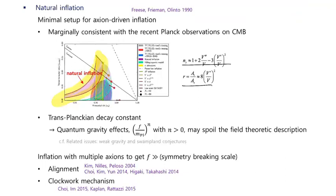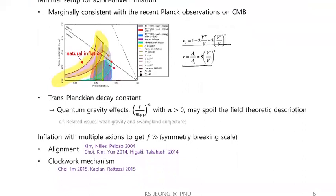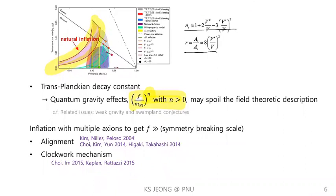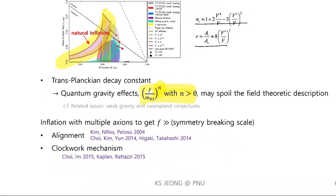The spectral index n_s and the tensor-to-scalar ratio r are determined by the shape of the potential. Another issue is that natural inflation requires a super-Planckian decay constant. This is not ideal because quantum gravity effects, which can be parameterized with some positive rational number, may spoil the validity of the field theory description. There are also related issues like the weak gravity conjecture and swampland conjecture, so people have considered model extensions to avoid these problems.